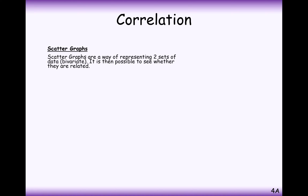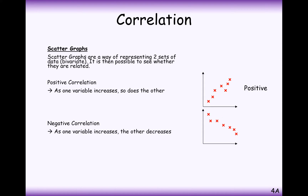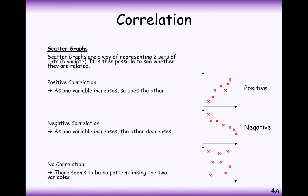Scatter diagrams represent two sets of data, typically bivariate data that have a connection between them. Positive correlation is where, as one value increases, another value increases — we say this has positive correlation. Negative correlation means as one value increases the other decreases. In the case of no correlation, there is basically no pattern between the data points in our data set.